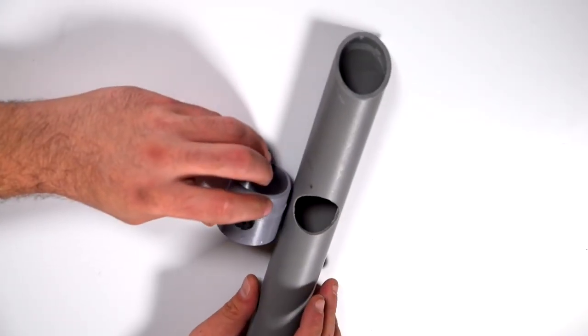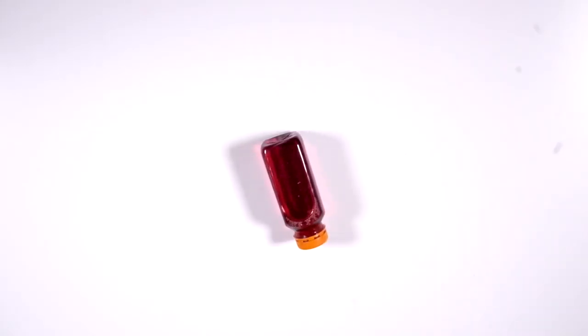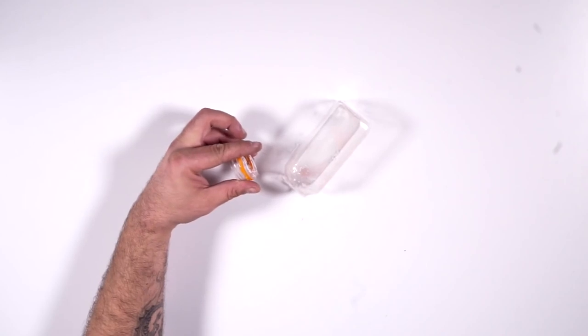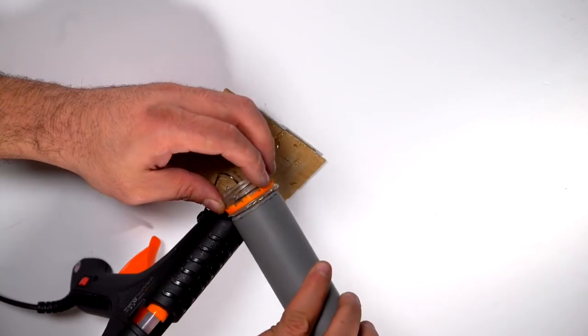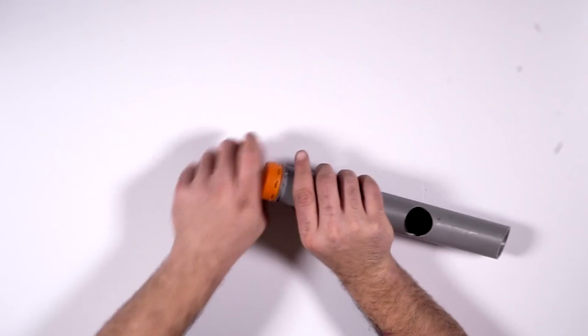One will be for the flashlight and the other for the switch. Now we will need a plastic bottle like this one. Wait a minute. Sorry, I was thirsty. Cut out the screw on cap and stick it on the bottom of the pipe. This will help us to change the batteries when necessary.